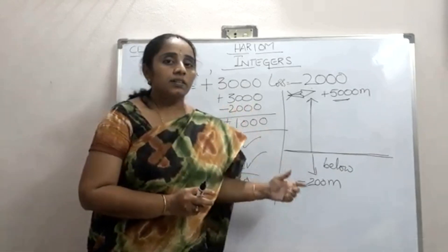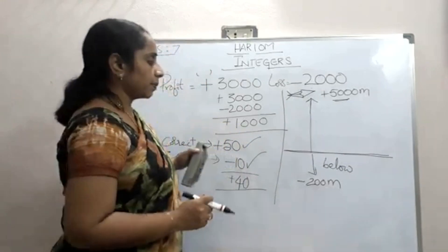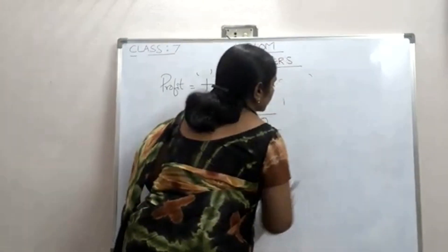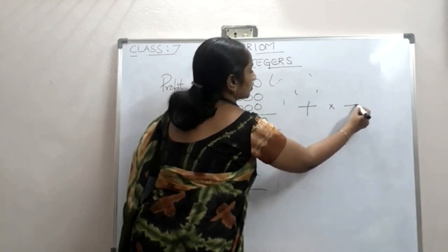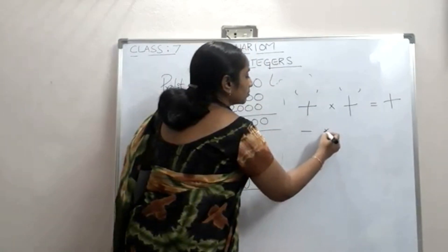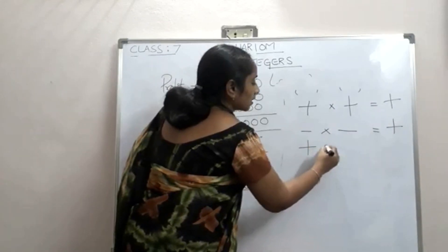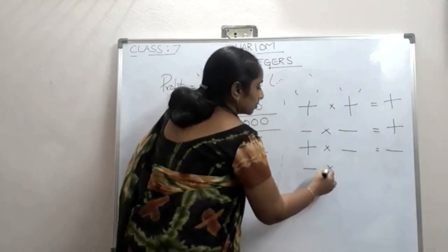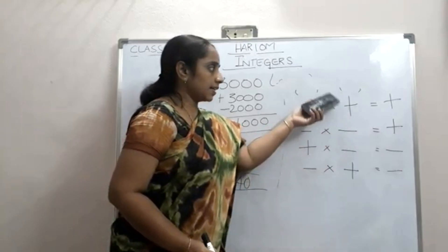This is about addition rules of integers. Now, under multiplication: if both integers are positive — plus times plus — the result is also plus. If both are negative, the result is positive. If one is positive and the other is negative, the result is negative. Likewise, minus into plus is equal to minus. These are the rules of integers under multiplication.